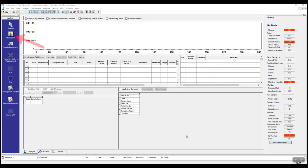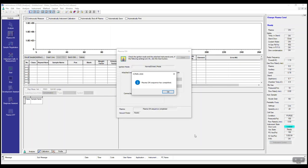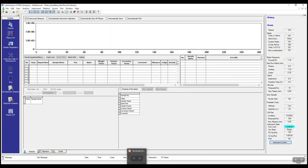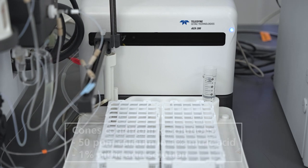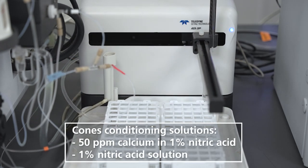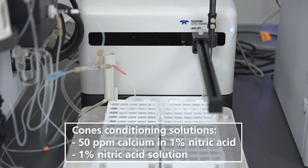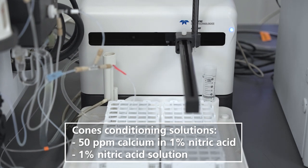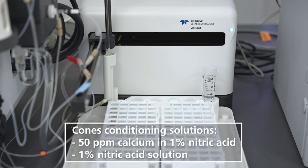After cleaning the cones, turn on the plasma and condition the cones before running the samples. A typical procedure to condition the cones is aspirating 50 ppm calcium solution for 10 minutes followed by aspirating 1% nitric acid blank solution for 10 minutes.